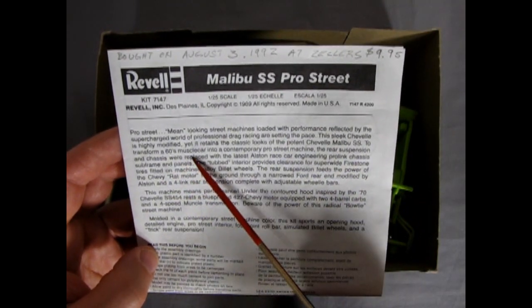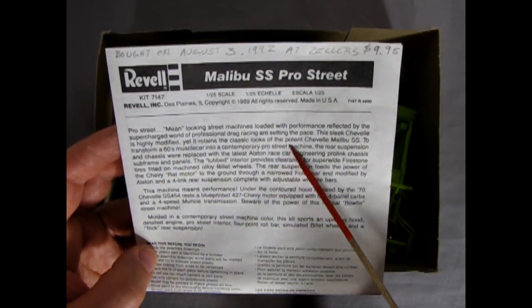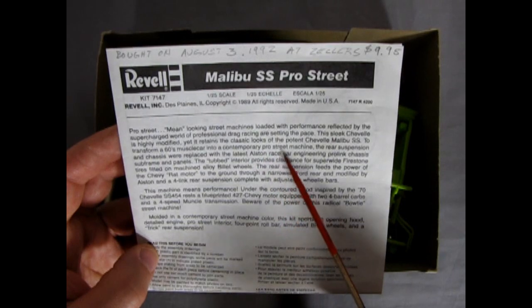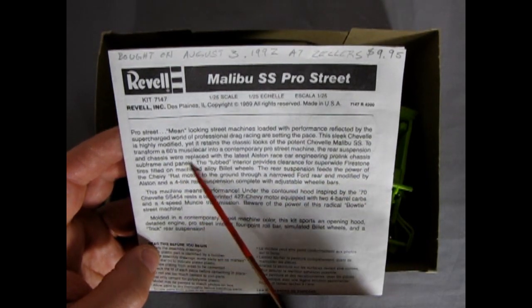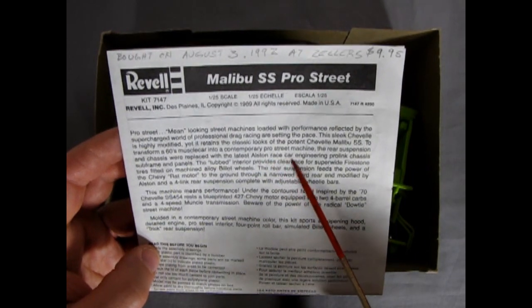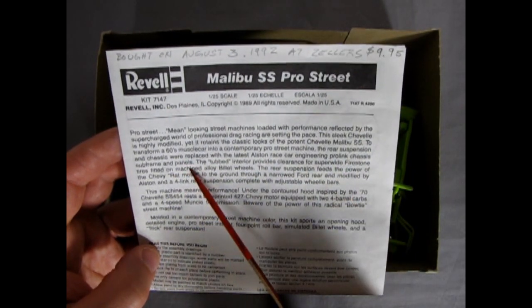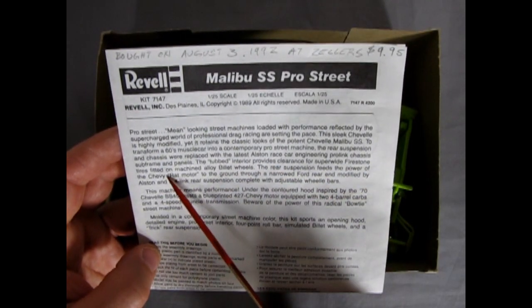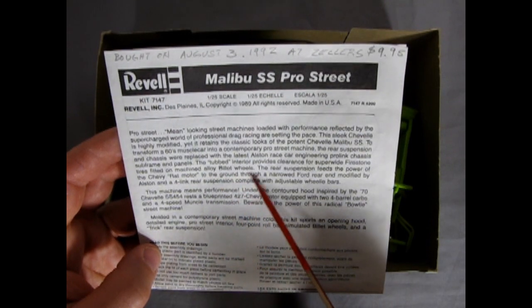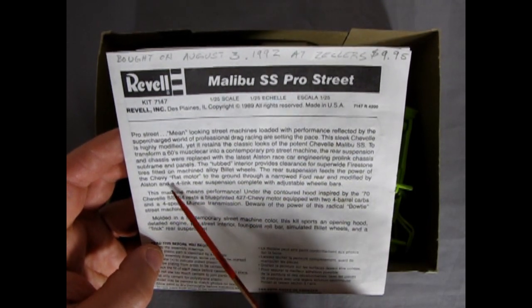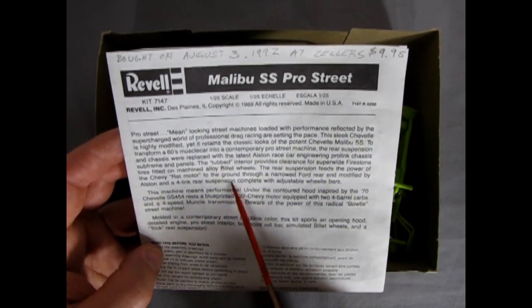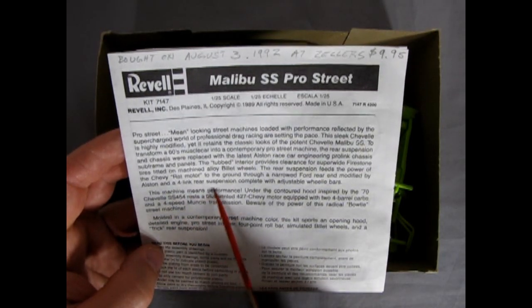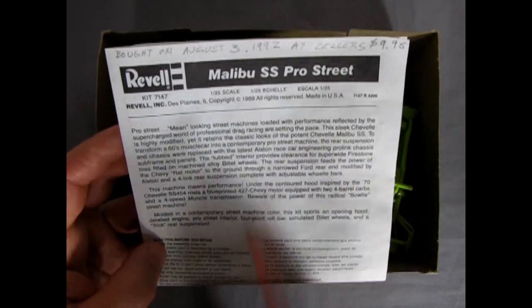Mean looking street machines loaded with performance reflected by the supercharged world of professional drag racing are setting the pace for 89. That's exciting. This sleek Chevelle is highly modified yet it retains the classic looks of the potent Chevelle Malibu SS. To transform a 60s muscle car into a contemporary Pro Street machine the rear suspension and chassis were replaced with the latest Alston race car engineering ProLink chassis subframe and panels.